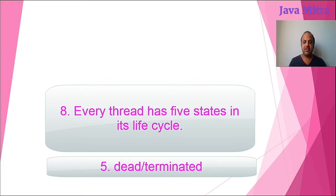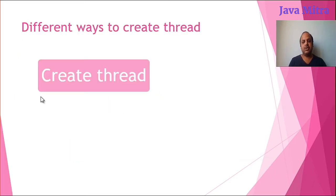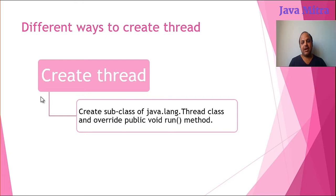Now it's time to know about different ways to create threads. So there are two different ways to create thread in Java. The first one is by creating a subclass of thread, that is java.lang.thread class, and override the public void run method.